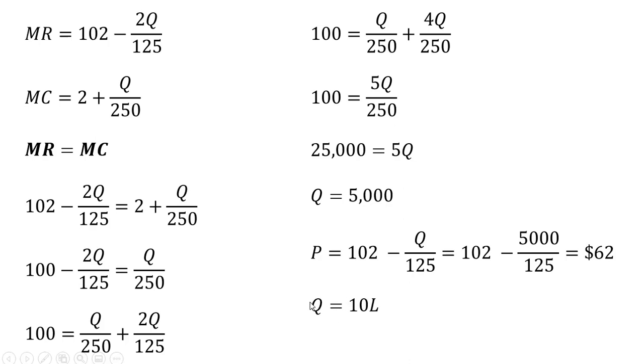To get the number of workers that this firm will employ, since this firm is producing 5,000 units, we'll plug that into the production function for Q. Solving for L, the firm will hire 500 workers. 500 workers will produce 5,000 units of output.